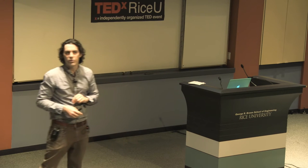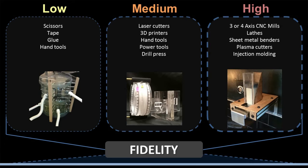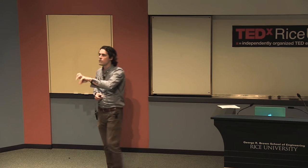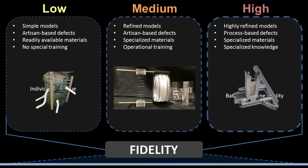When creating low, medium, and high-fidelity prototypes, you use different tools. Low-fidelity prototypes are created with whatever you have around — scissors, glue, and tape. Medium-fidelity uses laser cutters and hand tools, maybe some power tools. High-fidelity prototyping, which is almost ready to send to a factory, might use CNC machines or injection molding. Low-fidelity prototypes are individually unique; high-fidelity prototypes are manufactured in batches that are exactly the same, but require knowledge of advanced manufacturing skills and techniques.